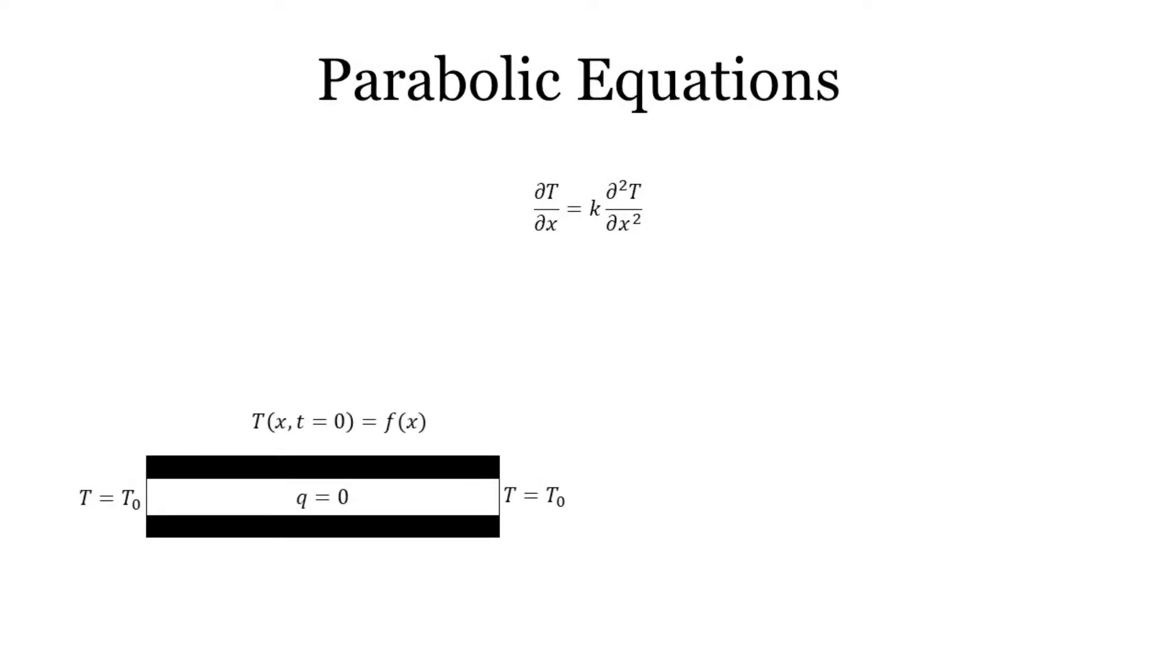Imagine a rod with both boundaries at a fixed T at x equals 0 and L of T equal to T0 and initial temperature distribution T of x at T equals 0. The following parabolic equation describes how the temperature distribution changes until some final T of x at T equals infinity is reached at equilibrium.